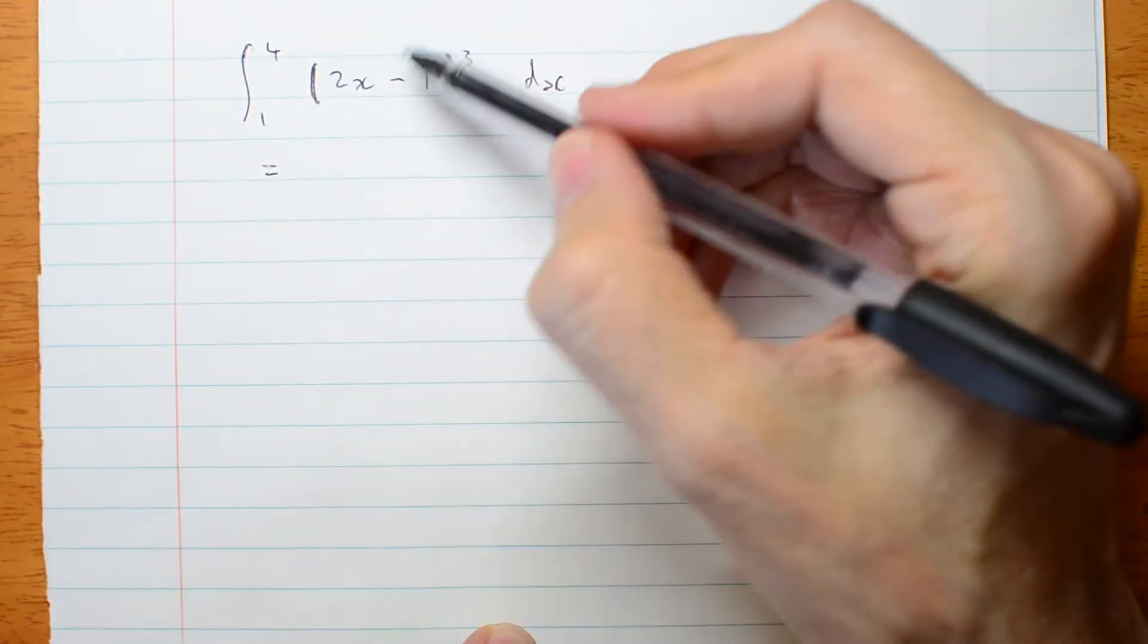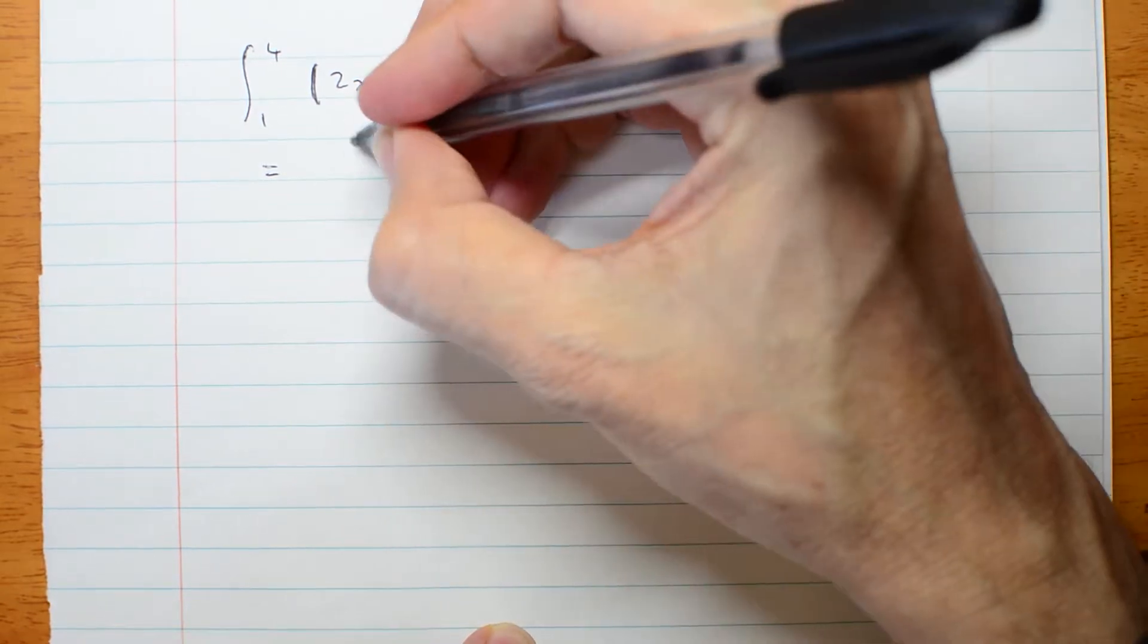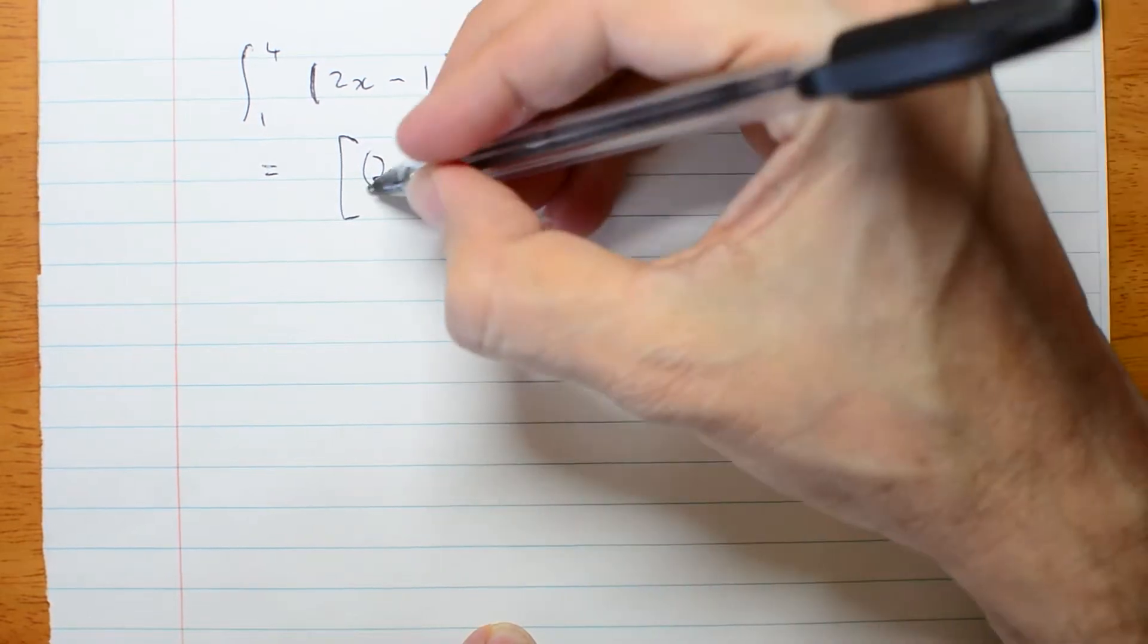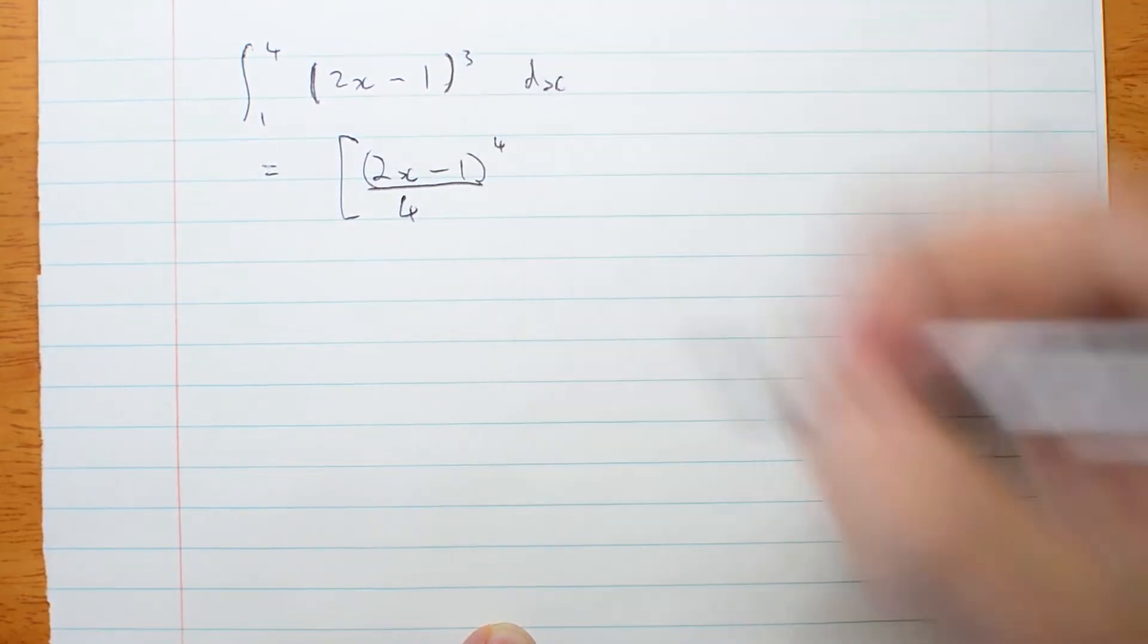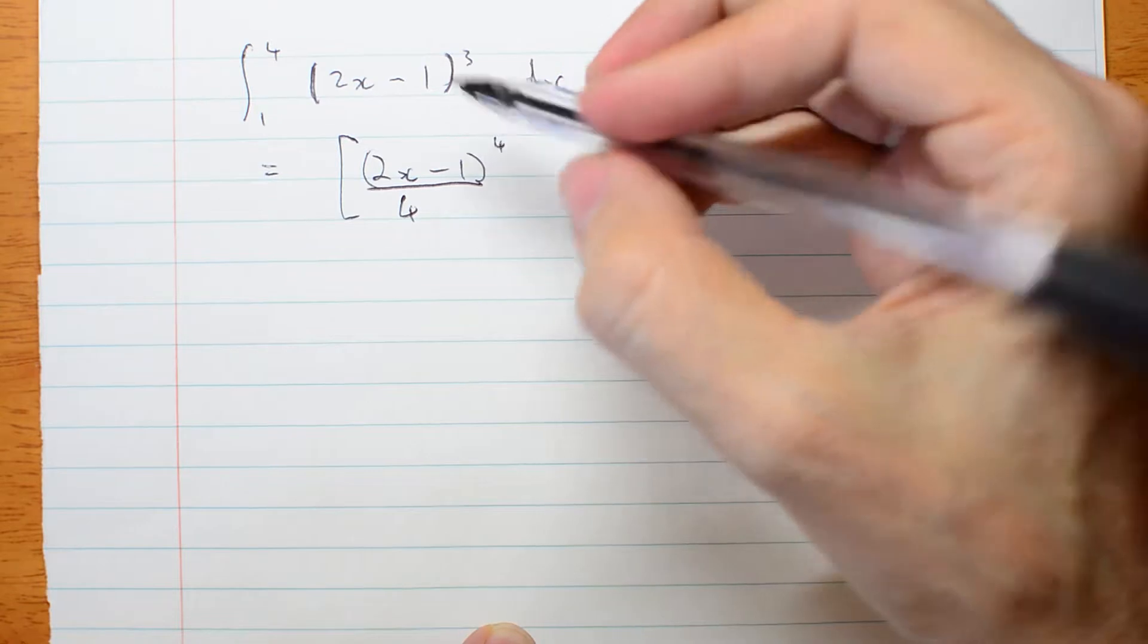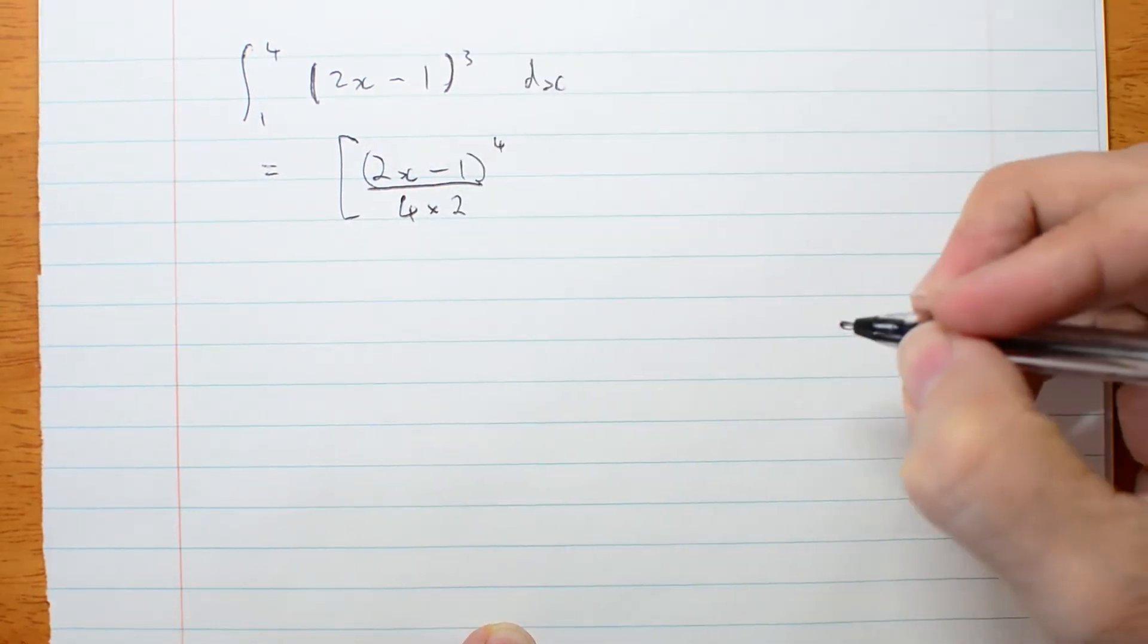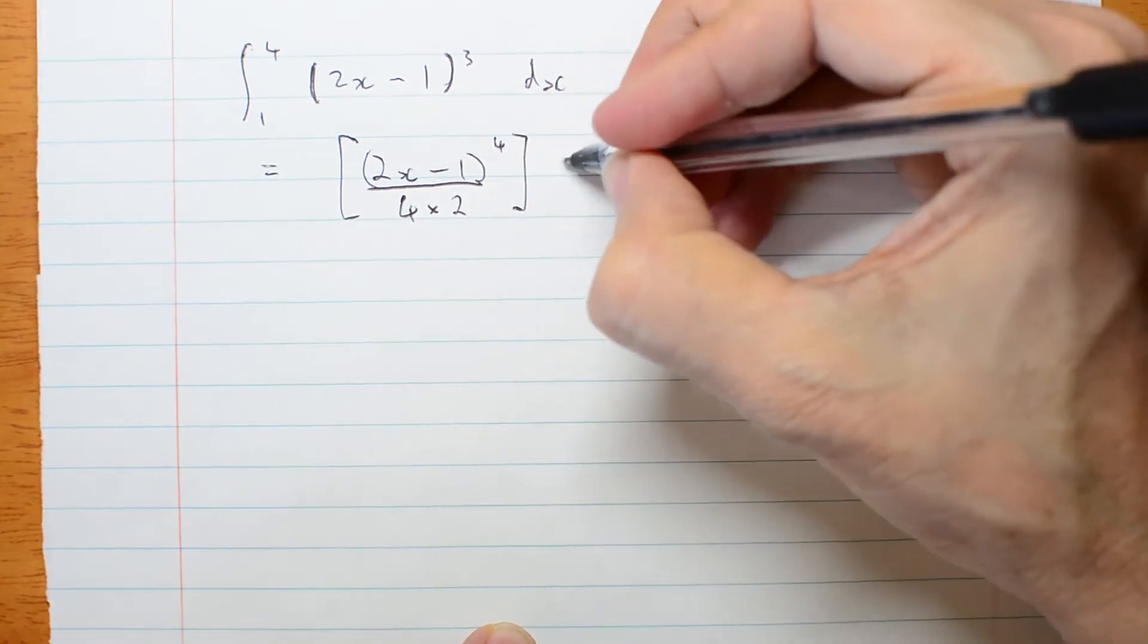You can simply go, it's something cubed. So it's going to be 2x minus 1 to the 4th over 4, because that was the cube. And then I'm also going to be dividing by that 2.